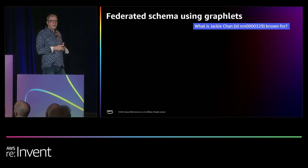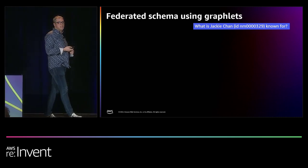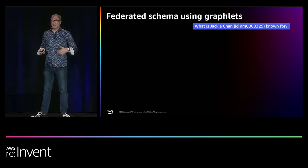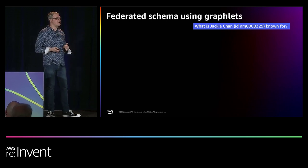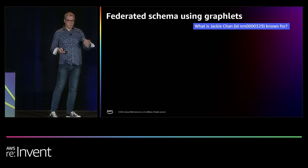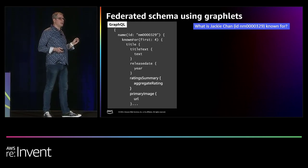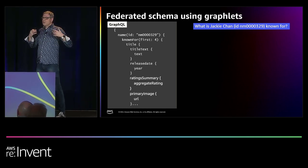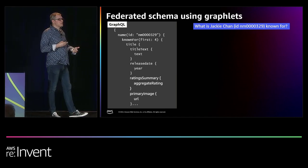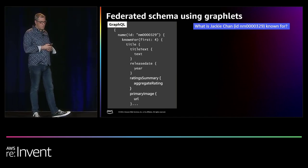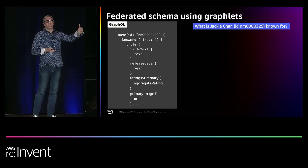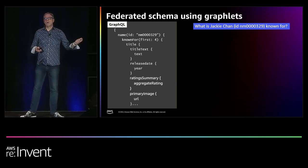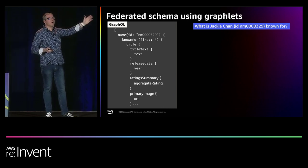To illustrate this, you're on IMDB and you type in Jackie Chan. The query asks: what are the top four shows that Jackie Chan is known for? Every entity in IMDB has an ID — this NM name entity is his, number 329. The client creates a GraphQL query, which lets you request all the information at once rather than making four separate REST calls. What's being requested: the name ID for Jackie Chan, the first four things he's known for, the title text, release date, aggregated ratings, and an image URL.